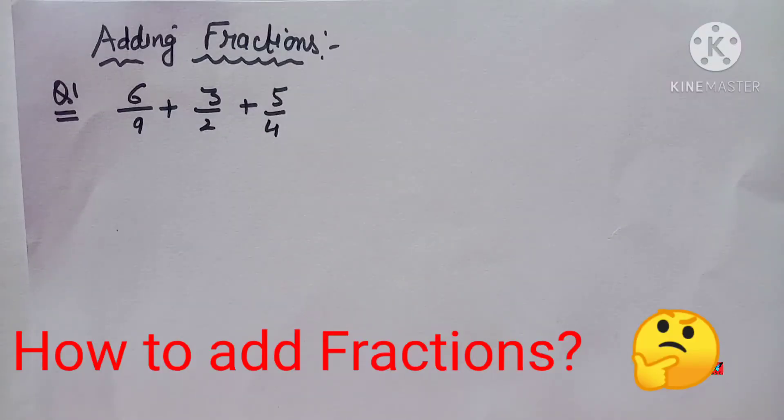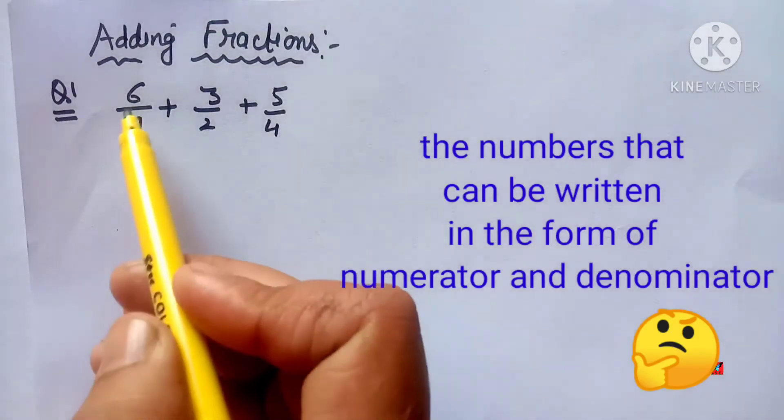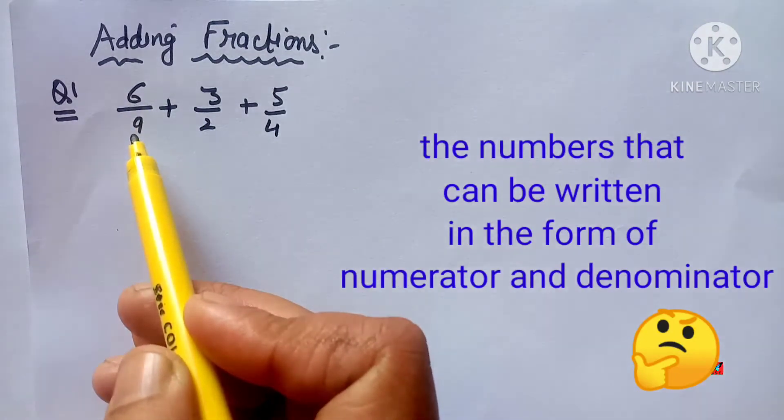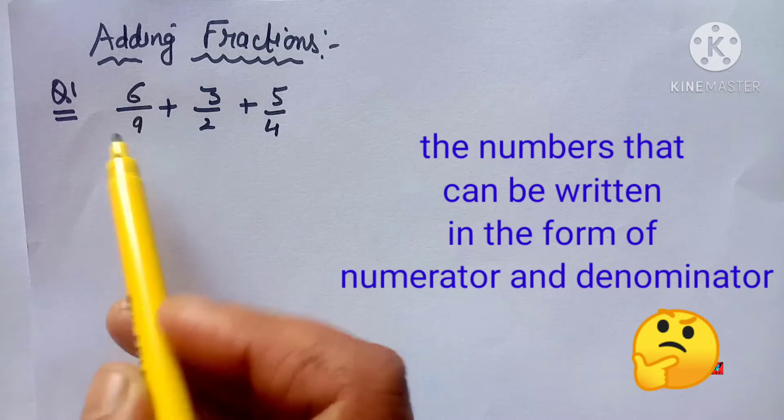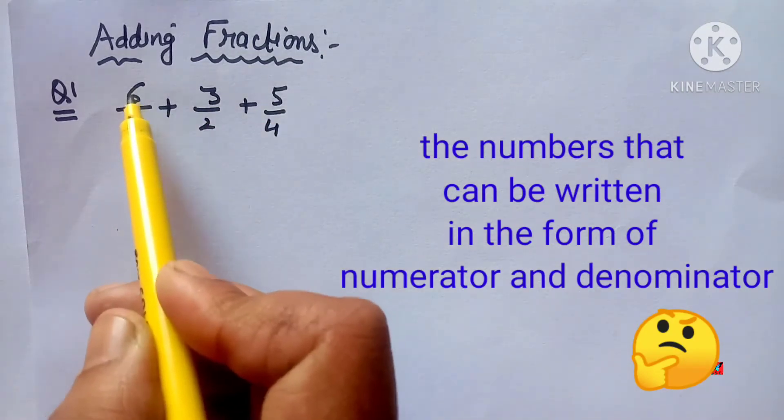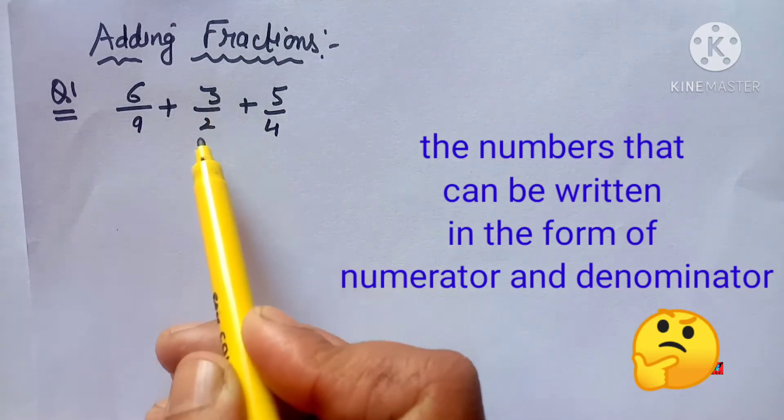In this video I will explain how to add fractions. First of all, what are fractions? Fractions are the numbers which have numerator as well as denominator, which can be written in the form of p upon q where q is not equal to 0. Fractions may have 1 numerator 1 denominator, 6 numerator 9 denominator, 3 numerator 2 denominator.